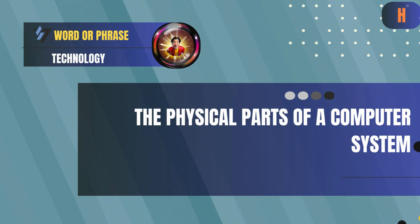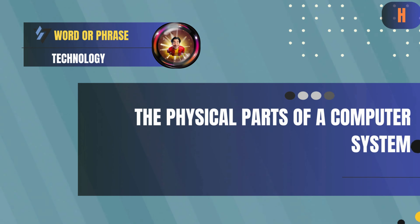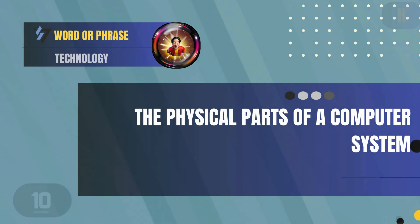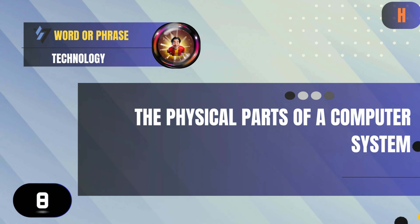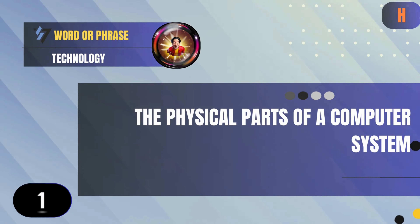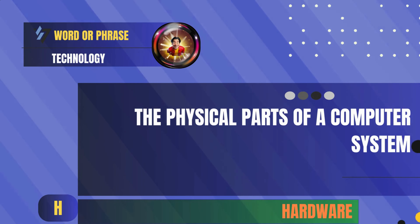H: The physical parts of a computer system. Answer: Hardware.